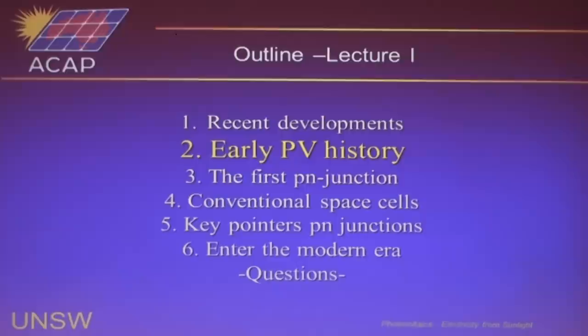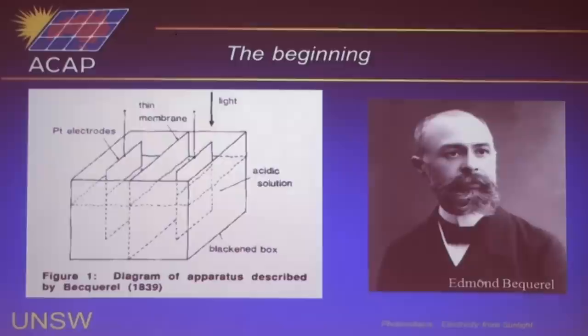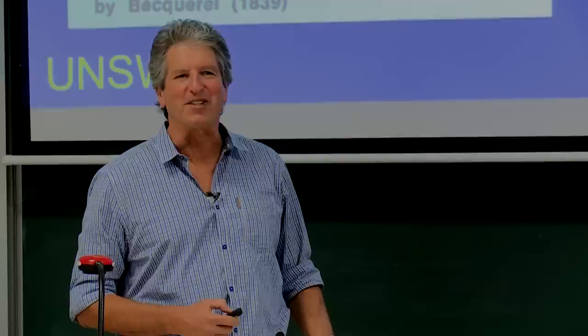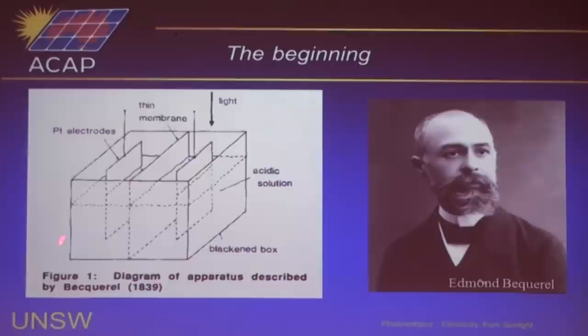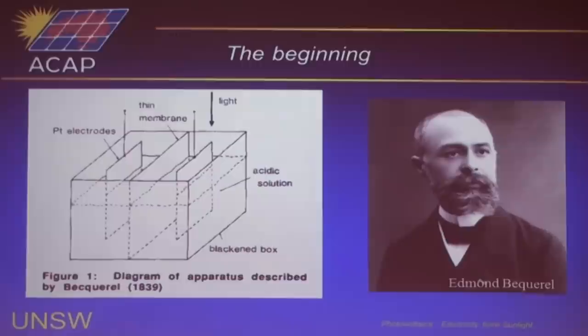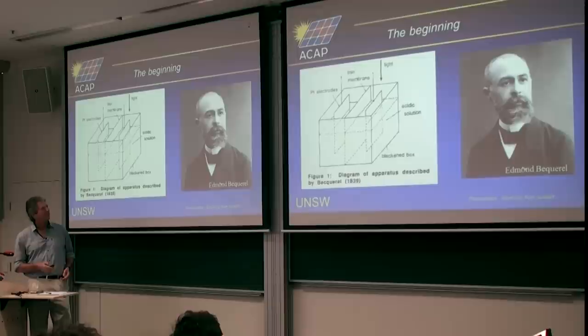Now I'd like to talk a little about the early PV history, going right back to the very early days. This is the first device regarded as a photoelectric generator. This is Edmund Becquerel — he was only 19 when he actually did this experiment. He was fiddling around with metal electrodes in liquid solutions, and he noticed that when he shone light on it, he could get electricity from it. This is regarded as the first photovoltaic demonstration — electricity from light — and he actually used that in a lot of his subsequent experiments.